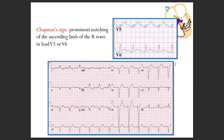What was the Chapman sign? If you remember, it was notching in the ascending limb. So on an overall basis, whenever you see those notchings, you have to start thinking there has been a myocardial infarction as well.